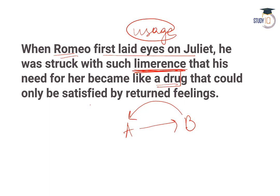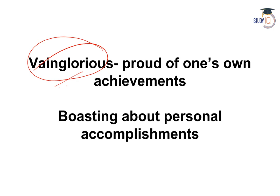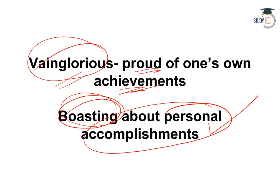Moving on to vainglorious. Vainglorious shabd ka arth hota hai — jab aap apne aap mein dheengen marte rehte hain aur aap apni kamyabiyon ke upar bohot zyada proud hote hain, jab aap boast karte rehte hain apne personal accomplishments ke baare mein, uske liye hum vainglorious shabd ka prayog karte hain.